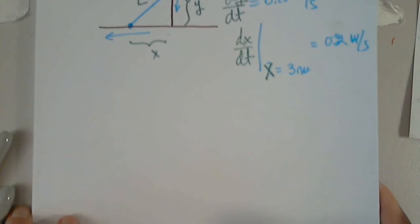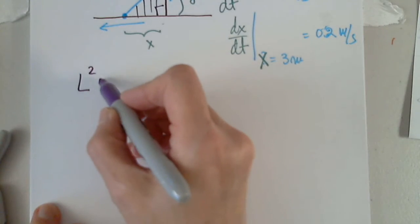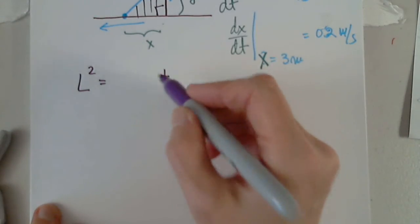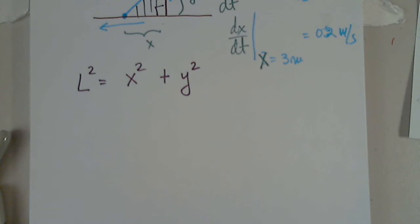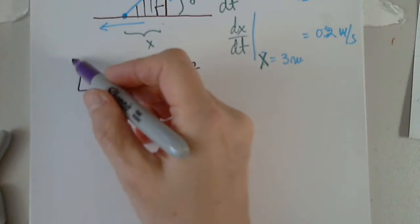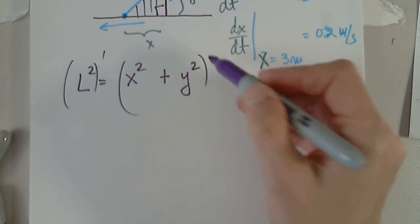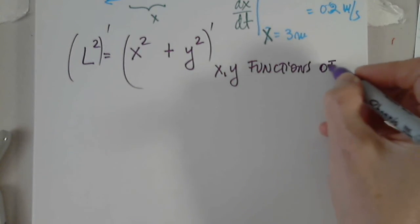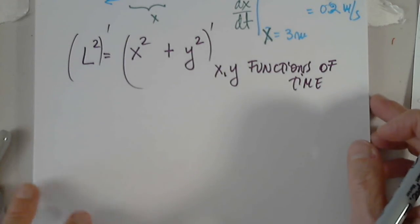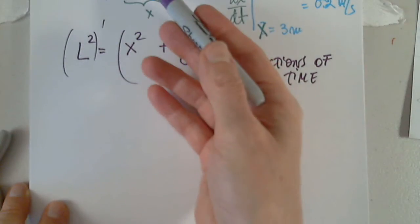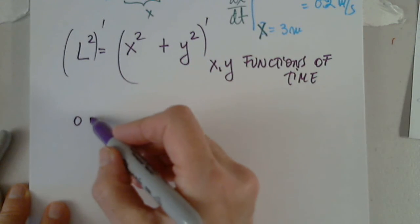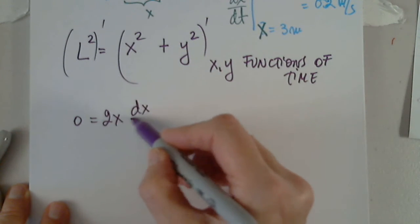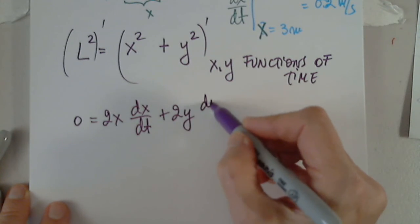Okay, so obviously I see that this is a right triangle. I will use the Pythagorean theorem that says the hypotenuse, which is the longest side, must be the sum of the squares of the two legs: L squared equals x squared plus y squared. I will differentiate both sides implicitly, knowing that x and y are functions of time. When I differentiate a constant, I get 0. And on the other side, I have 2x dx/dt plus 2y dy/dt.